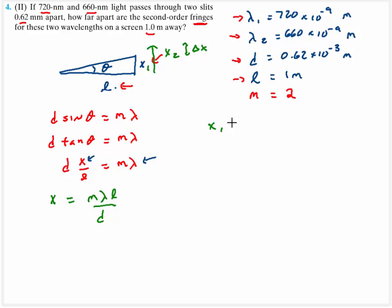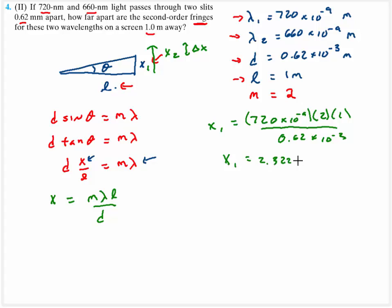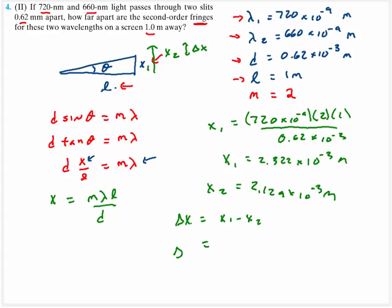x is simply equal to m lambda multiplied by the length of the screen divided by the distance. So x1 is going to be equal to 720 times 10 to the negative ninth, times m, times length 2, divided by 0.62 times 10 to the minus 3. So x1 equals 2.322 times 10 to the minus 3 meters. For x2 you come up with 2.129 times 10 to the minus 3 meters. Delta x is x1 minus x2, and we end up with about 1.935 times 10 to the minus fourth meters.